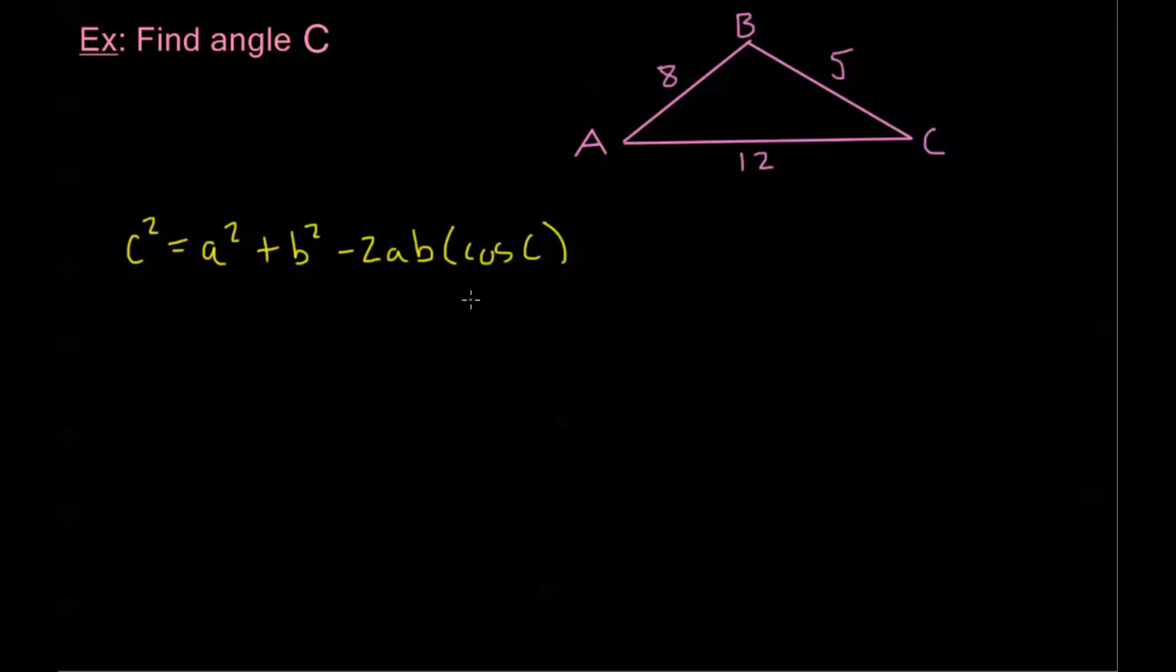Now let's plug in the information that we have. C is the side opposite angle C, so we have 8 squared equals - my side a is 5, so I have 5 squared. My side b is 12, so plus 12 squared, minus 2 times a which is 5, times b which is 12, times cosine of C. All that we have is an unknown of big C, so we can solve for this.